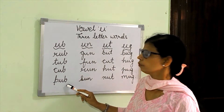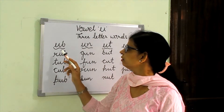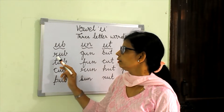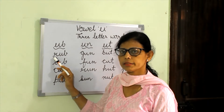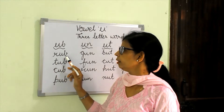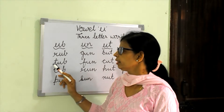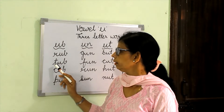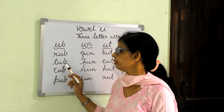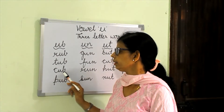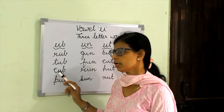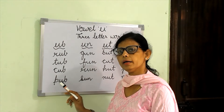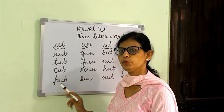Now make words from the ending sound UB. R says 'ruh' — R, U, B: rub. T says 'tuh' — T, U, B: tub. C says 'cuh' — C, U, B: cub. P says 'puh' — P, U, B: pub.